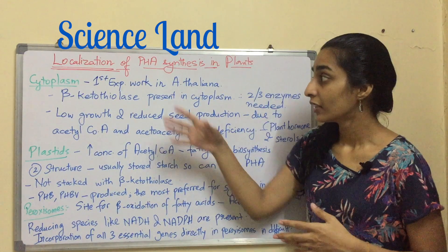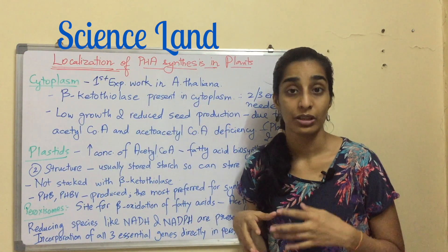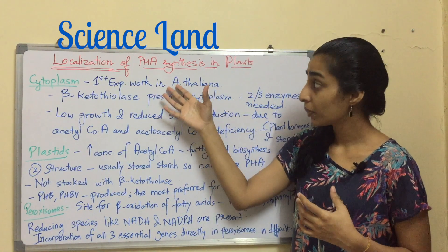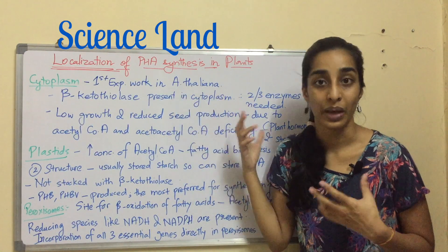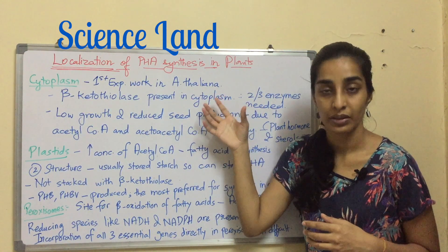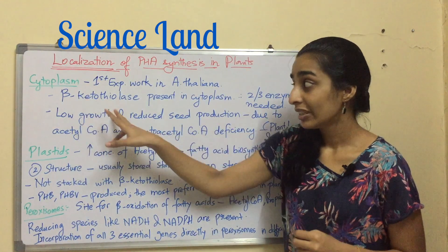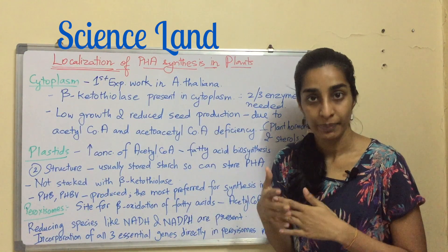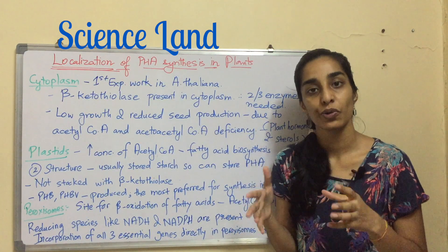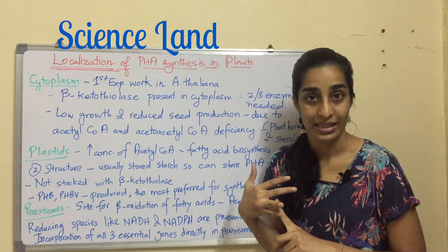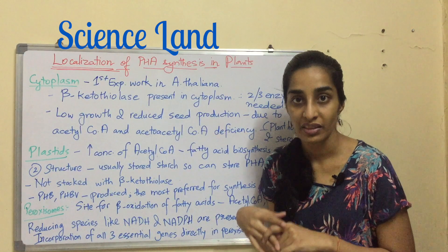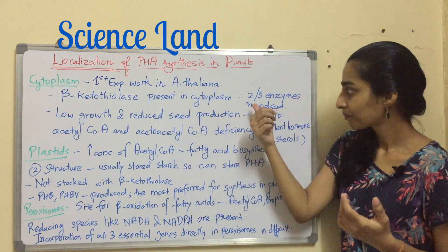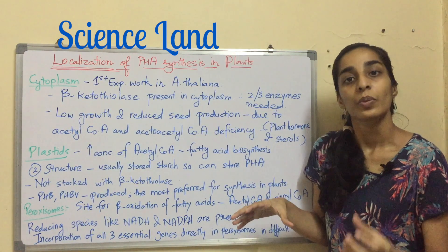The very first cellular compartment is the cytoplasm, which was actually the first compartment used to produce PHA. The first experimental work was carried out in the cytoplasm of Arabidopsis thaliana. The beta-ketothiolase enzyme is already present in the cytoplasm. Knowing the biosynthesis of PHB — the most basic PHA — three enzymes are required: beta-ketothiolase, acetoacetyl-CoA reductase, and PHB synthase. Since beta-ketothiolase is already present, only the other two enzymes need to be integrated into the plant.